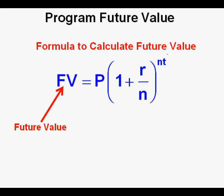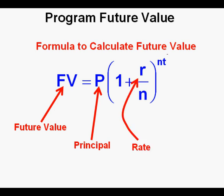This two-letter variable FV stands for future value. It's our dependent variable and is the final calculation after plugging in values to the right side of the formula. This letter P stands for principal — it can also be called the starting or beginning amount. This letter R stands for the rate. Verbally this number is usually given as a percentage, but in the formula that percentage is converted to a decimal by dividing the percentage amount by 100.